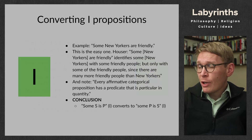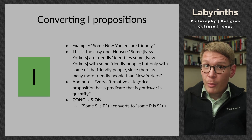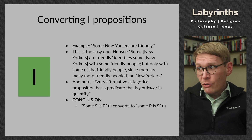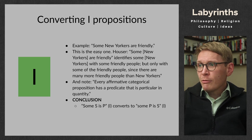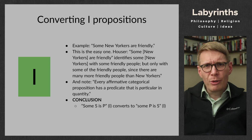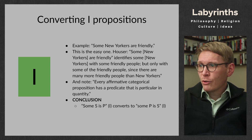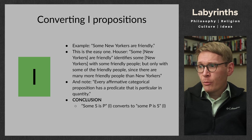For particular affirmative propositions, take the example: 'Some New Yorkers are friendly.' This is the easy one. As Hauser writes, 'Some New Yorkers are friendly' identifies some New Yorkers with, implicitly, some friendly people — but only with some of the friendly people, since there are many more friendly people than there are New Yorkers. Every affirmative categorical proposition has a predicate that is particular in quantity. So Some S is P validly converts to Some P is S — we switch the subject and predicate terms and maintain the particular quantity.